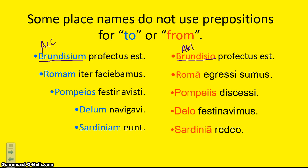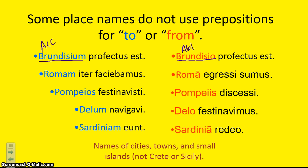Continuing with place names without prepositions: 'Delum navigavi' — I sailed to Delos; 'Delo festinavimus' — we hurried from Delos; 'Sardiniam eunt' — they go to Sardinia; 'Sardinia redeunt' — they return from Sardinia. All of these have something very important in common — they are all names of cities, towns, or small islands. Note that Crete or Sicily are not included because they're also considered countries, and countries require a preposition. When you see accusative or ablative forms of proper city, town, or small island names, translate them as you would with a preposition, but without one.